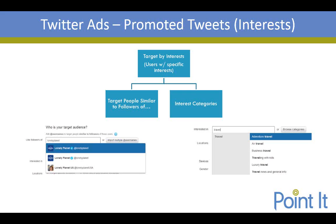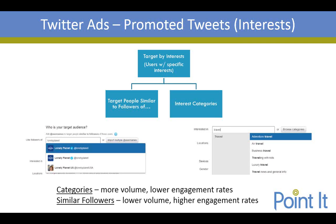Interest categories are somewhat similar to the Google Display Network, where you have various categories you can target. Twitter limits it to 100, so you can only expand so far, though they can get down to some rather niche categories. Categories tend to drive a lot more volume but lower engagement rates. Targeting similar followers may have lower volume but generally higher engagement rates. We prefer to go with similar followers — we've found it can perform really well. It really depends on what you're going after and how relevant the tweet content is to the folks you're targeting.